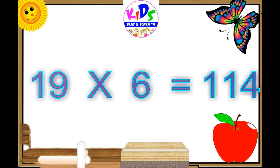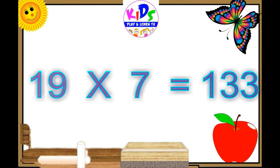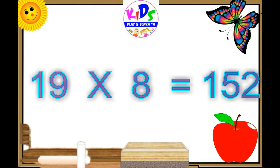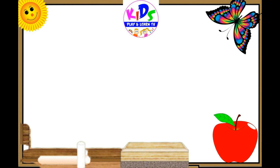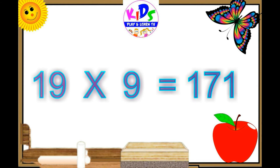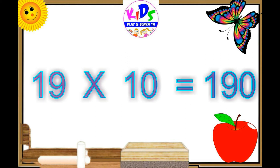Nineteen sixes are hundred and fourteen. Nineteen sevens are one thirty-three. Nineteen eights are one fifty-two, nineteen eights are one fifty-two. Nineteen nines are one seventy-one, nineteen nines are one seventy-one. Nineteen tens are one ninety.